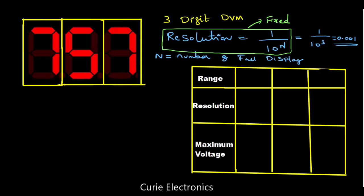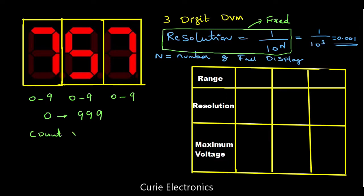These three digits are full digits — each seven-segment display can count from 0 to 9. So the count can vary from 0 to 999. That means the total count value equals 1000. So this three full digit voltmeter can range from 0 to 999 counts.